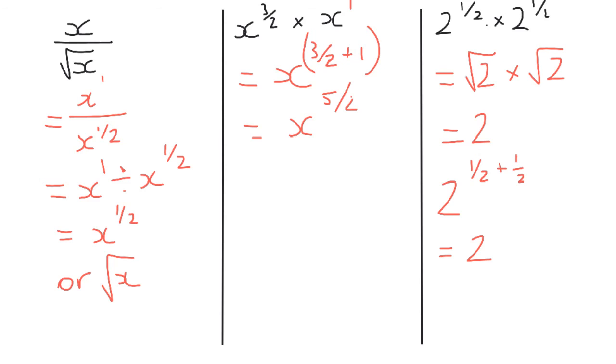We can get 4 to the power of a half which is the square root of 4 which becomes 2. But we've either got to treat this really as a surd problem or correctly as an index problem.